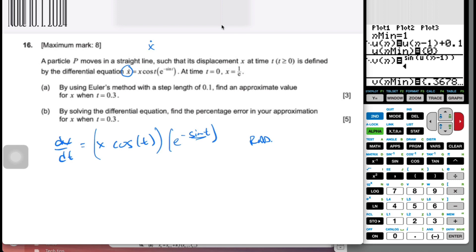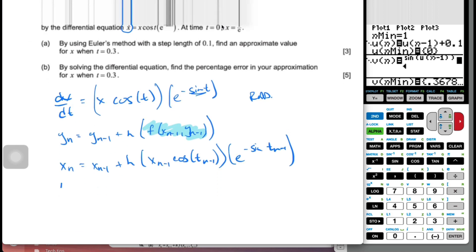When we actually are going to do this using Euler's formula, we know that Euler's formula says yn equals yn minus 1 plus h times f of xn minus 1 comma yn minus 1. I know this here is the derivative, so y is like x here, so I know it's xn equal to xn minus 1 plus h, and then this is the derivative. So it's xn minus 1 cosine tn minus 1 times e to the minus sine tn minus 1. And then for t of n will be tn minus 1 plus h.